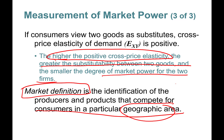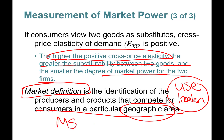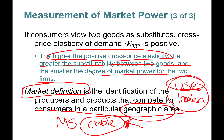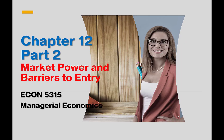Market definition is important in identifying producers and products competing for consumers in a particular geographic area — defined both in terms of use and location. The cable company in Mississippi wasn't a national monopoly, but in that town it had strong market power. You also can't compare unrelated goods like Coca-Cola and weed killer — the market definition must make sense. In Part Two we'll talk about market power and barriers to entry.